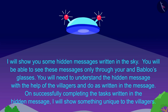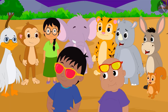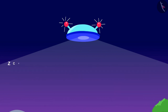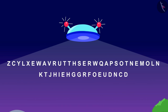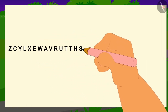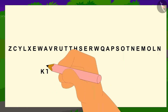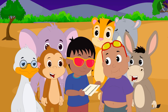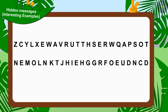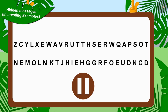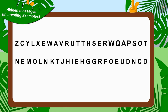Raju read out this message to all the villagers. After the message was completed it disappeared and a new hidden message appeared in its place. Raju wrote the first hidden message on a piece of paper and showed it to the villagers. All the villagers got together to solve that hidden message. Children, can you solve this hidden message? If you wish to, you can stop the video and find the answer.